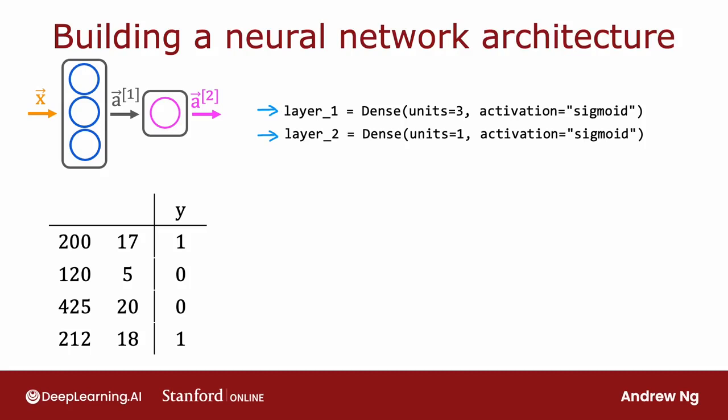we can instead tell TensorFlow that we would like it to take layer one and layer two and string them together to form a neural network. That's what the sequential function in TensorFlow does, which is it says, Dear TensorFlow, please create a neural network for me by sequentially stringing together these two layers that I just created.